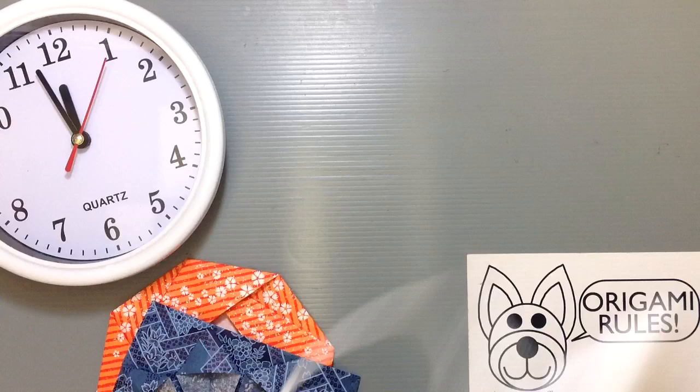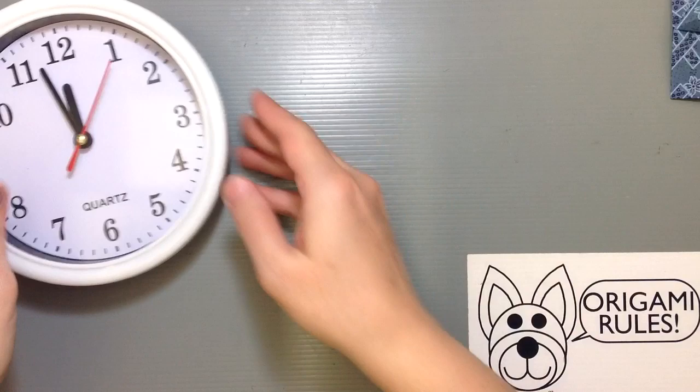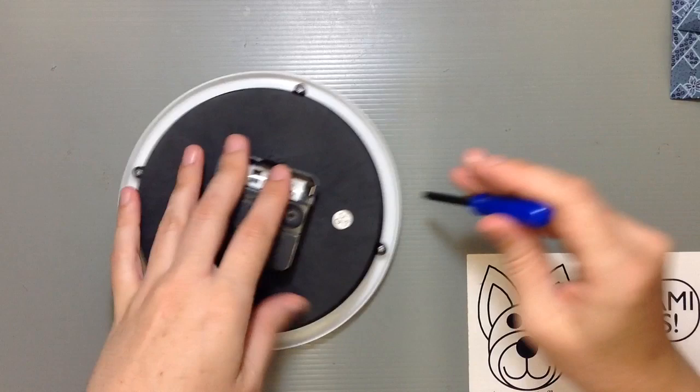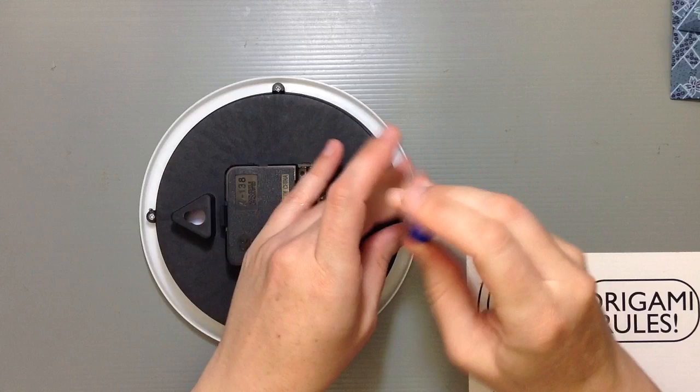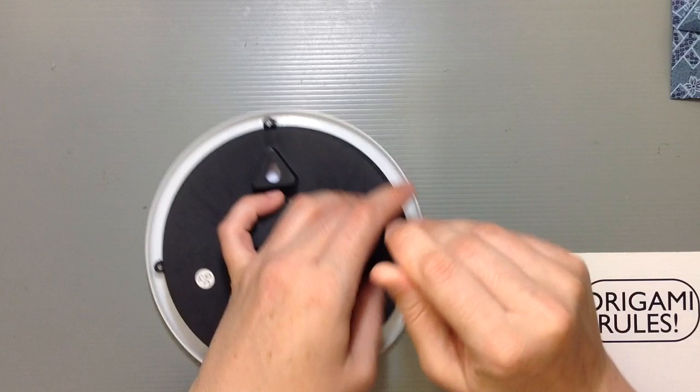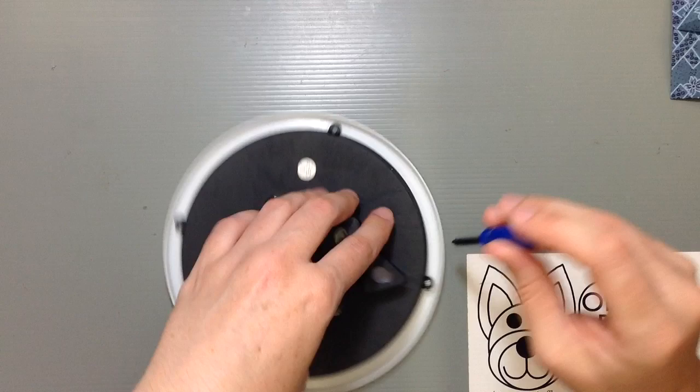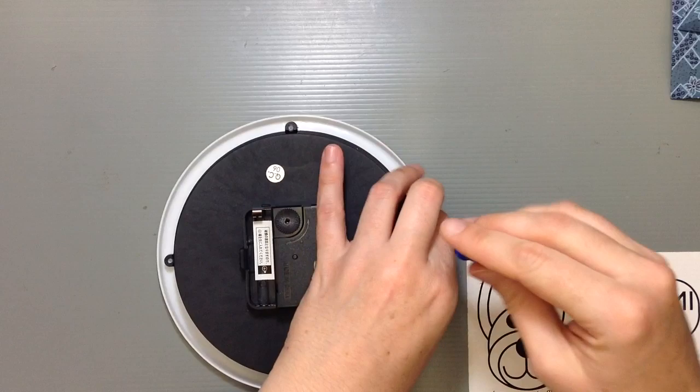The big thing too is that we want to be able to pop open this little guy. Everybody's clocks are going to be put together differently. This one, you just separate the face from the back with these little screws. These don't usually pop out very easily. You kind of have to just leave things together. Everybody's clocks are going to be a little different. The cheaper they are, the less likely they are to be taken apart well.